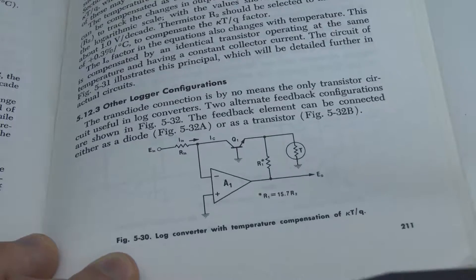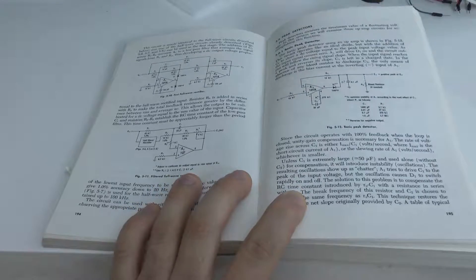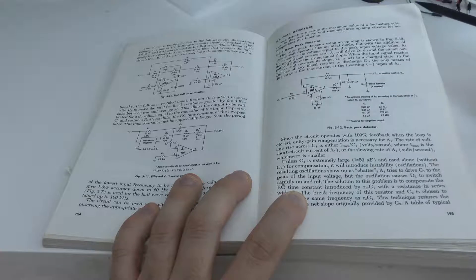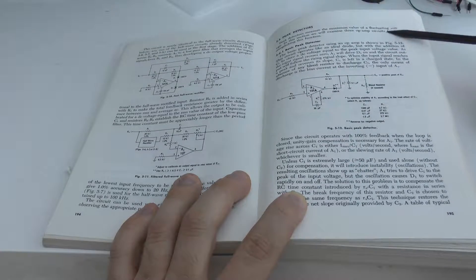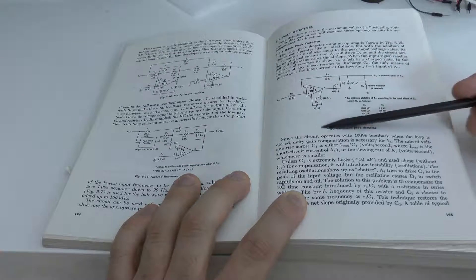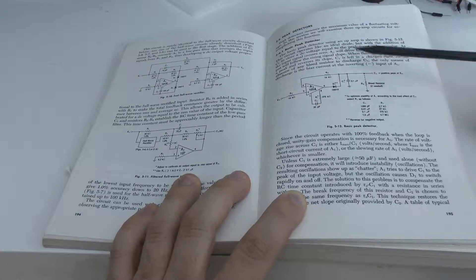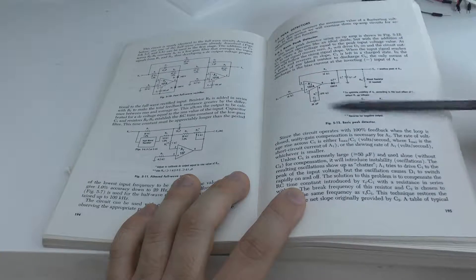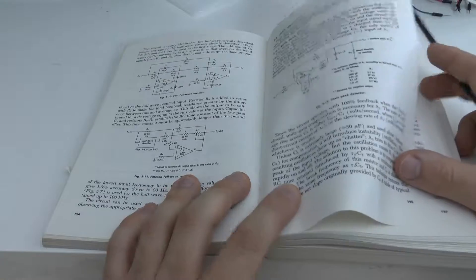One area where Jung really deserves praise is his approach to handling topics. For example, here we've got a chapter on peak detectors. You see that he starts out with a basic peak detector consisting of the minimal amount of components and the simplest circuit possible.